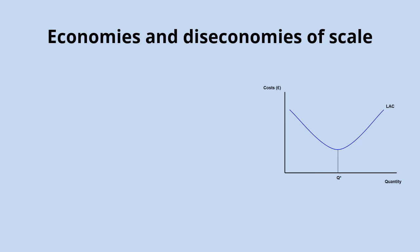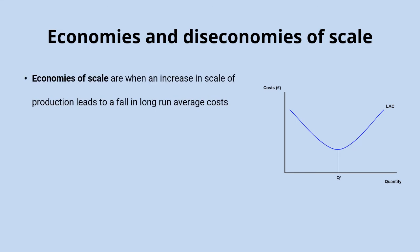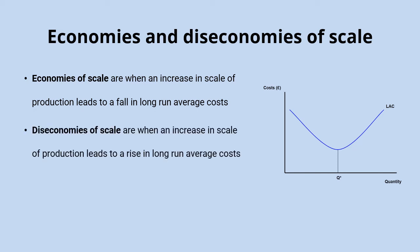There is a direct link between returns to scale and economies and diseconomies of scale. As a reminder, economies of scale are when an increase in the scale of production leads to a fall in long run average costs, and diseconomies of scale are when an increase in the scale of production leads to a rise in long run average costs. They usually produce a U-shaped long run average cost curve: as a firm grows from relatively low levels of output it experiences economies of scale and falling long run average costs, and at higher levels of output diseconomies of scale start to dominate and long run average costs begin rising.